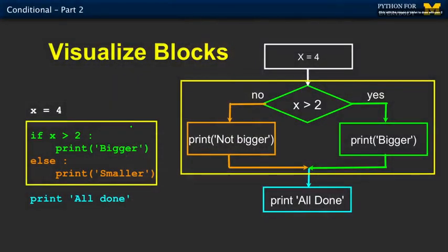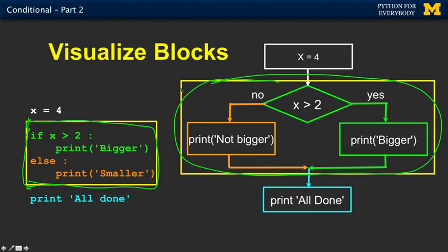In this case, you think of the block as starting at the if and then ending after the last indented line. But the if and the else are a piece of one thing. One of the things about these blocks is they have one entrance and one exit. That's how these blocks work.